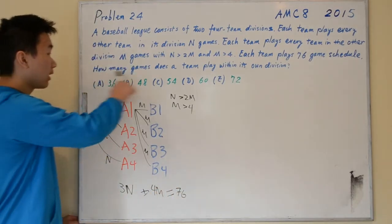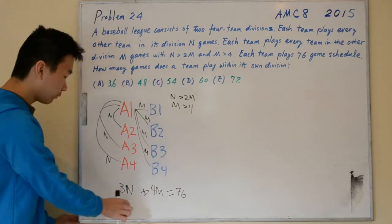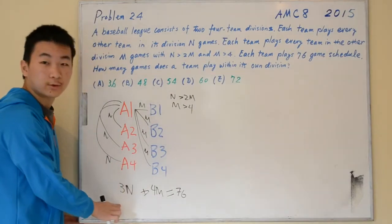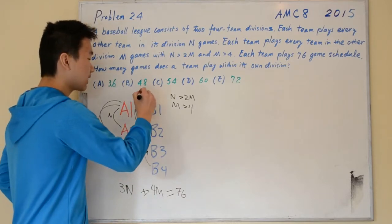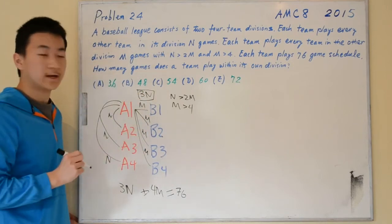We are looking for how many games a team plays within its own division. Within its own division, it will play 3N games. So we are seeking to find what 3N equals.